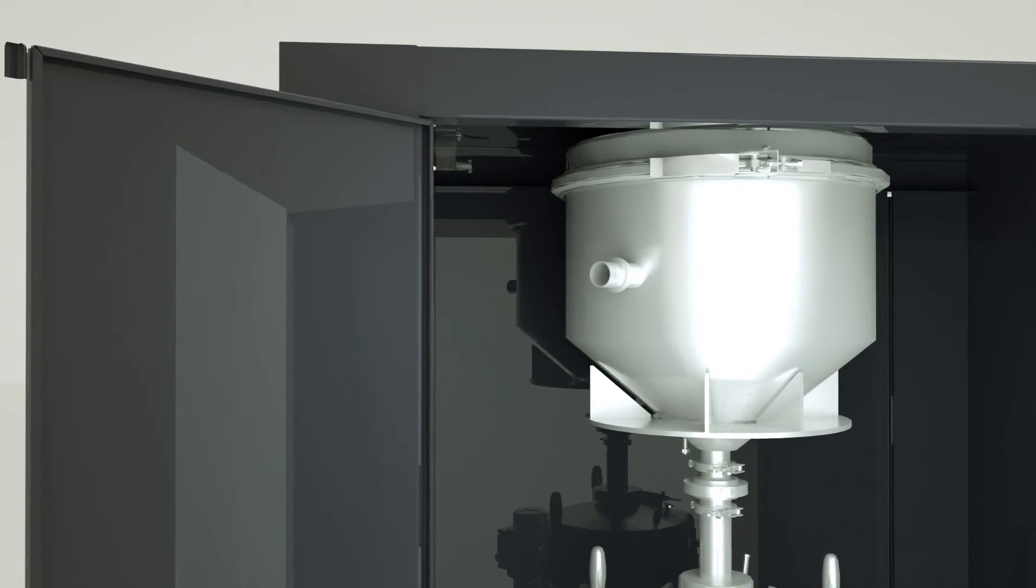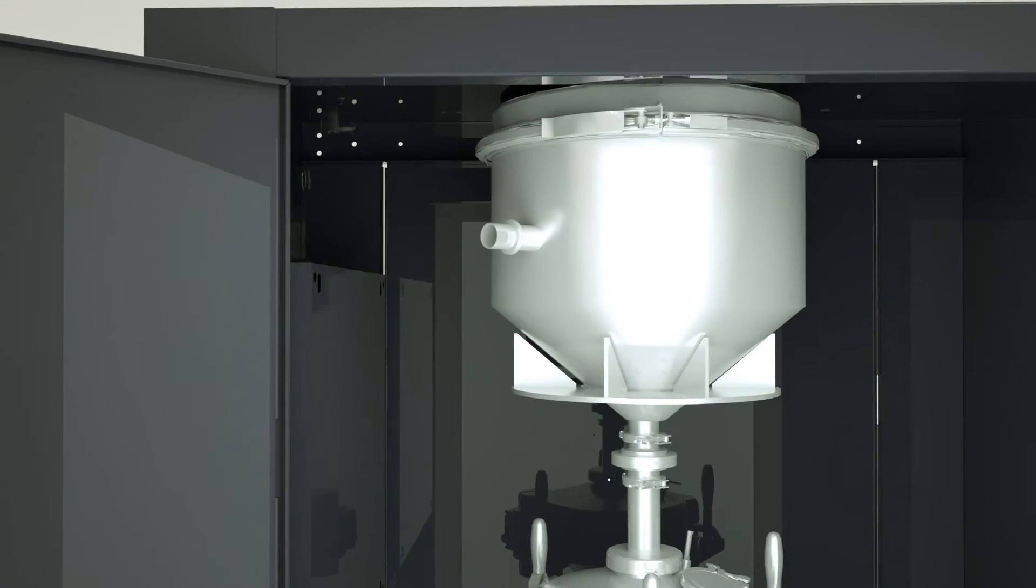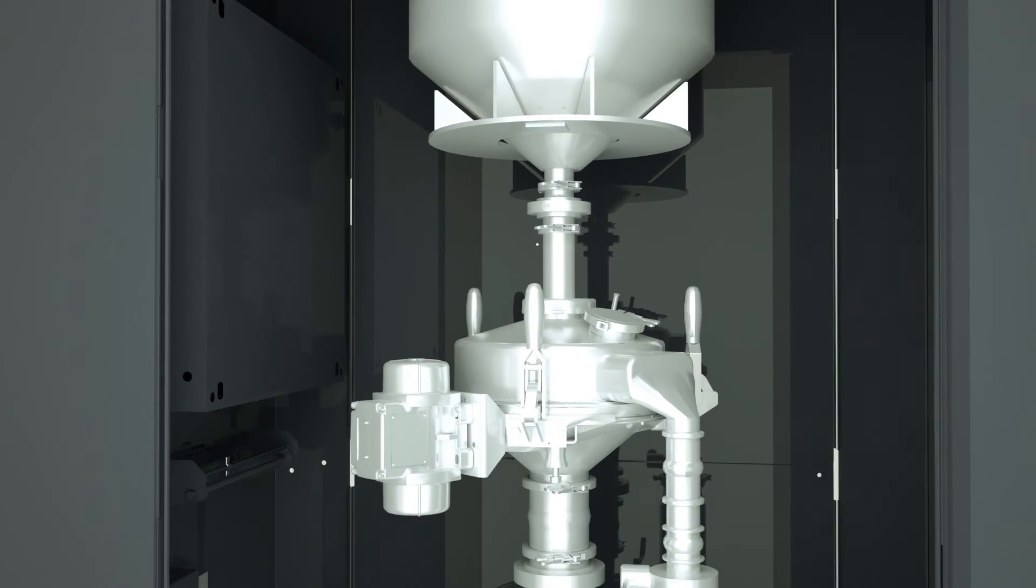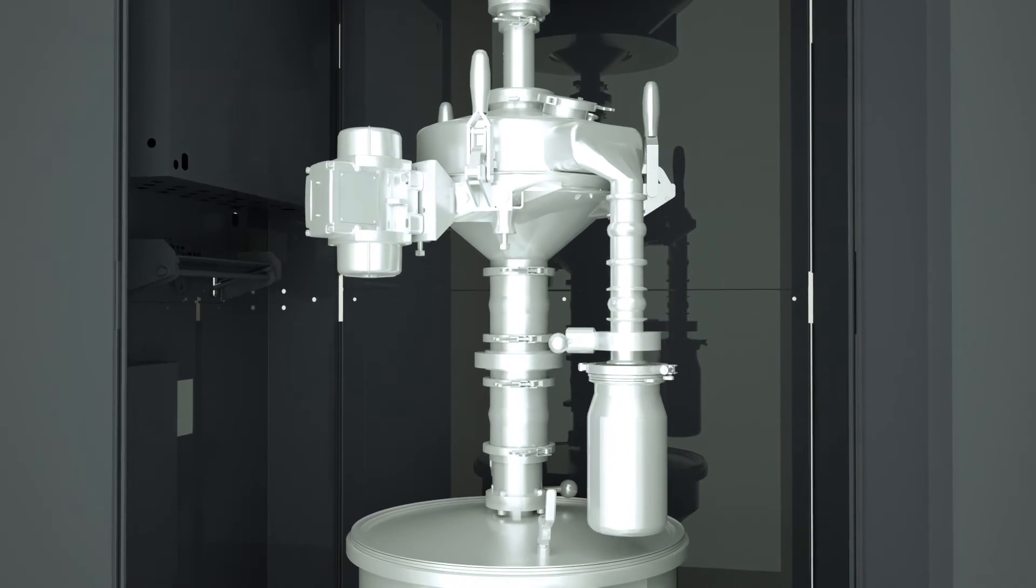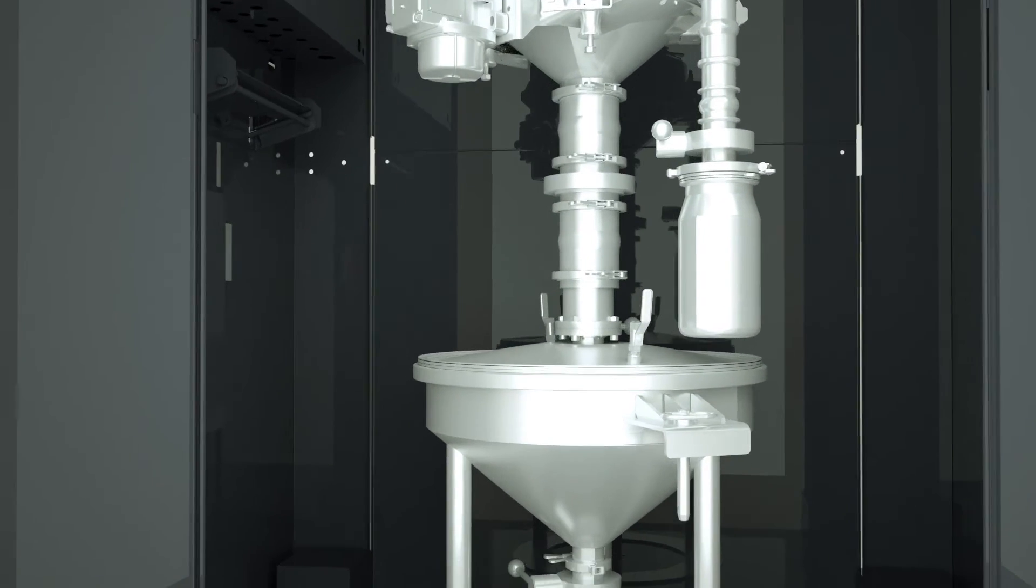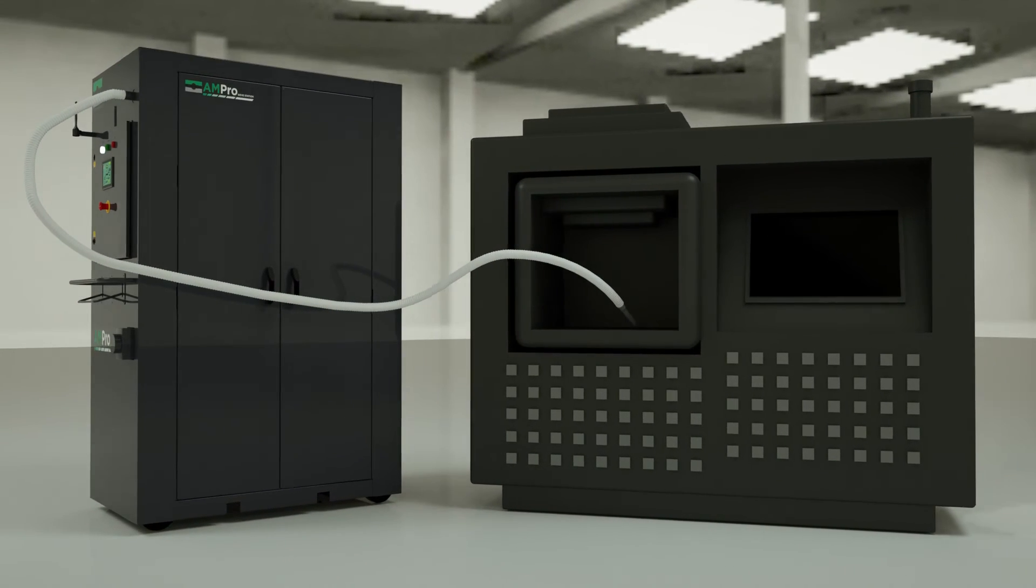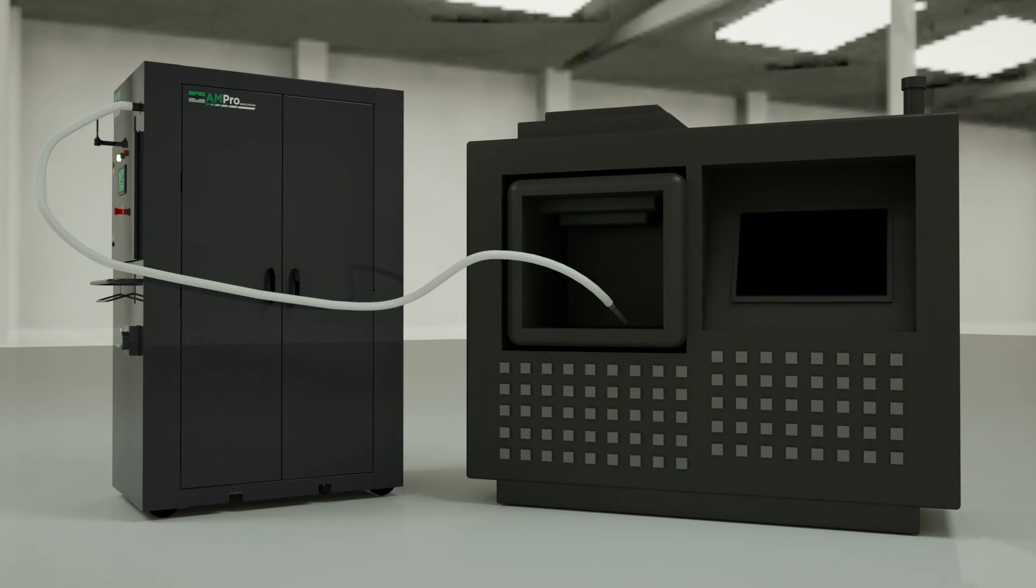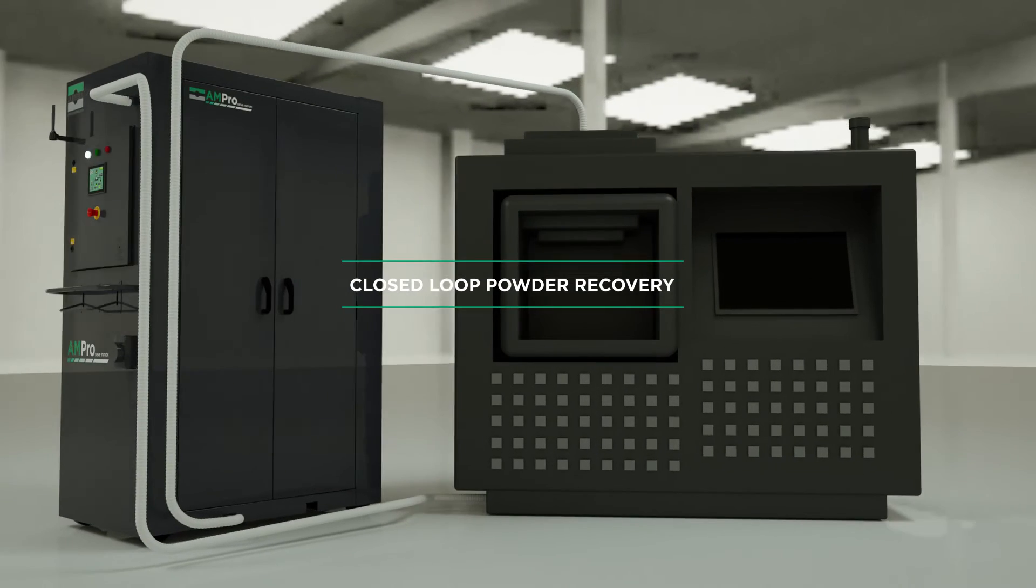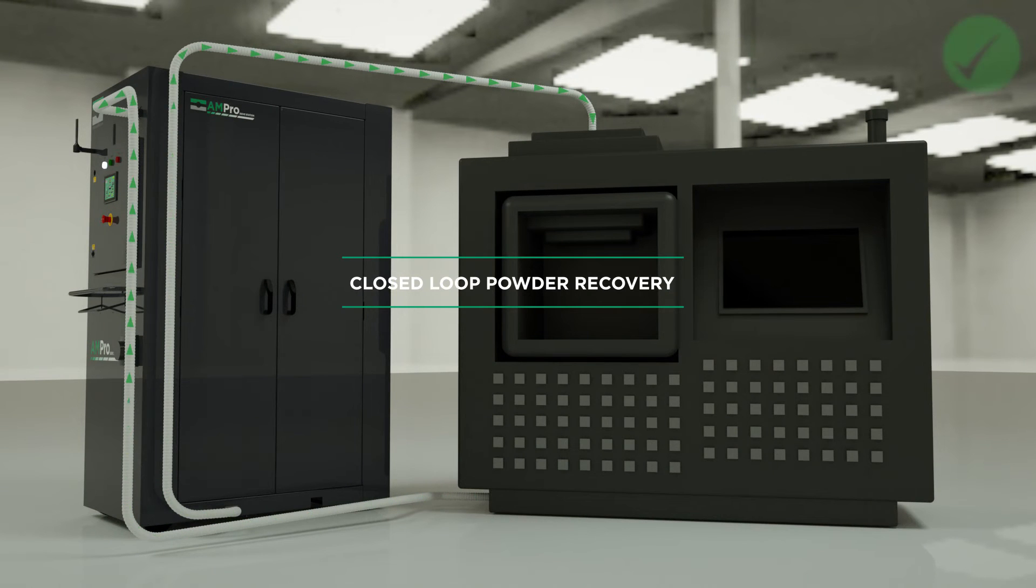Secondly, after a build is complete, unused powder can be recovered efficiently. This would traditionally have been done by manually transferring powders between vessels. However, the Russell Ampro sieve station has been developed to provide full integration into your printer setup through the rapid evacuation of used powder directly from the build chamber via integrated closed-loop powder recovery.